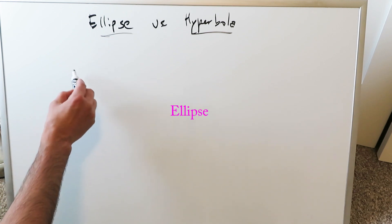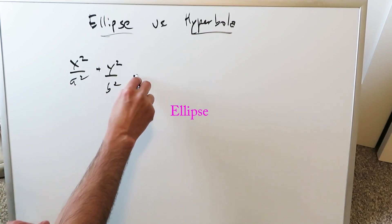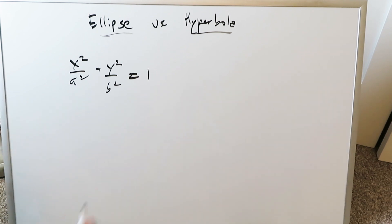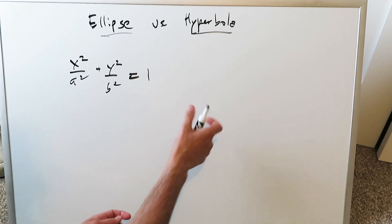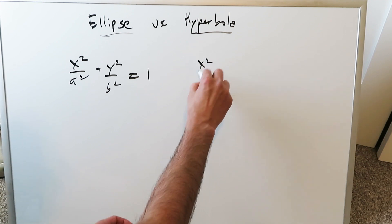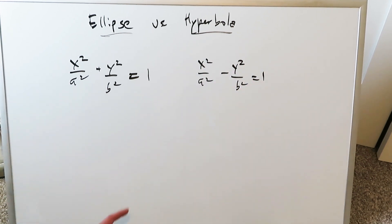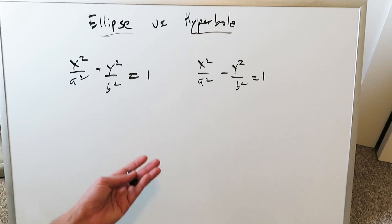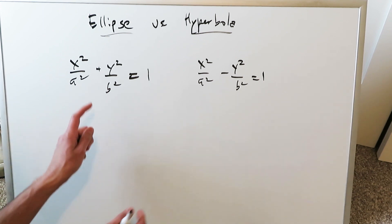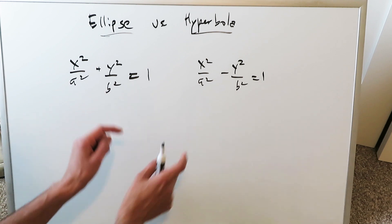We are looking here at a horizontally directed ellipse: x squared over a squared plus y squared over b squared equals 1. The representative equation of a similar characteristic horizontally directed hyperbola would be x squared over a squared minus y squared over b squared equals 1. In both instances the center is the origin. These are standard equation forms for ellipse and hyperbola. Look at the difference — plus and minus — that stands out as the most important difference here: positive and negative.